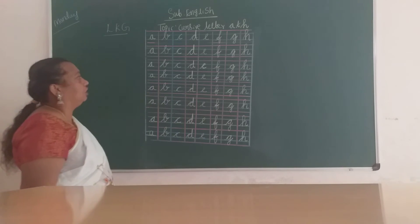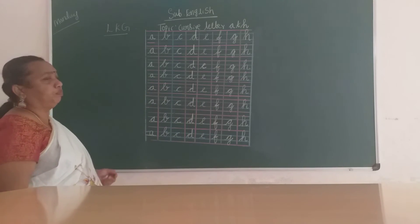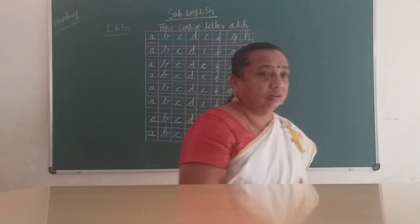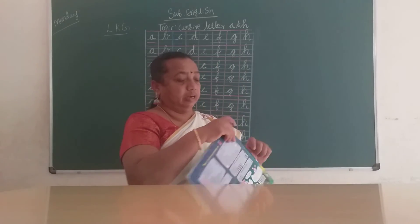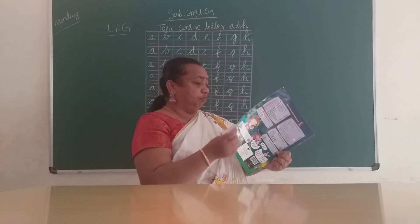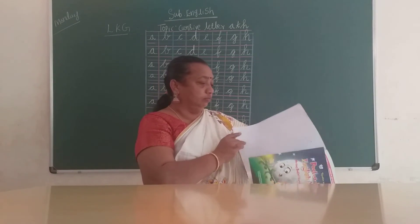Take out your paper and practice cursive letters A to H on A4, children. Now take out your English reader, page number.